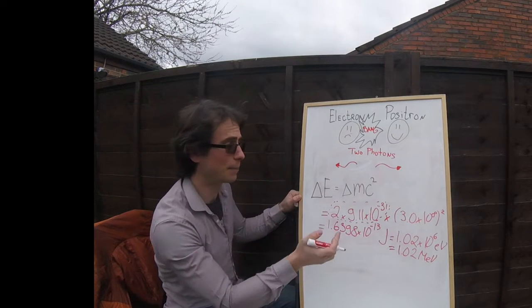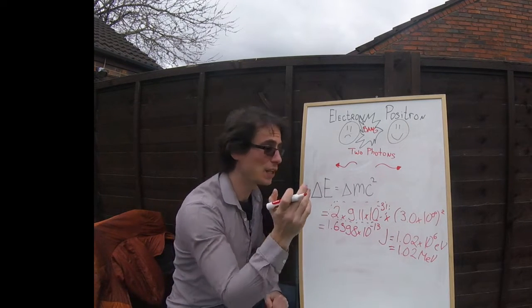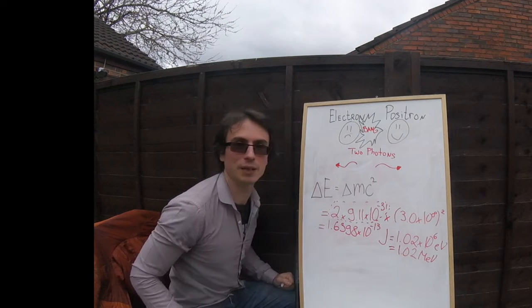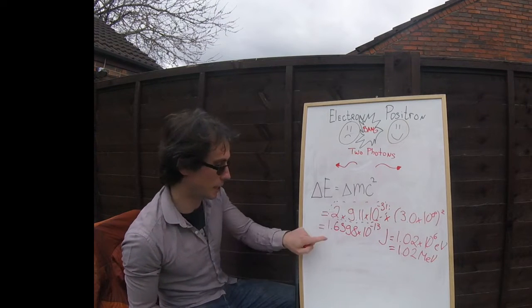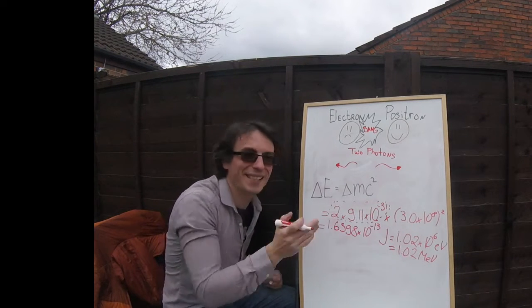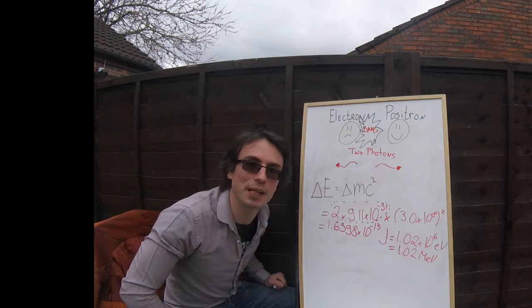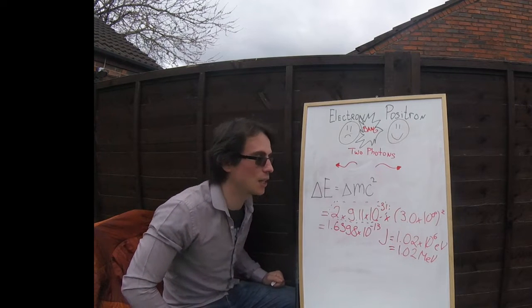And then we're going to multiply that by the speed of light squared which is 3 times 10 to the 8 squared. When we input those numbers into a scientific calculator we get about 1.6398 times 10 to the power of minus 13 joules.